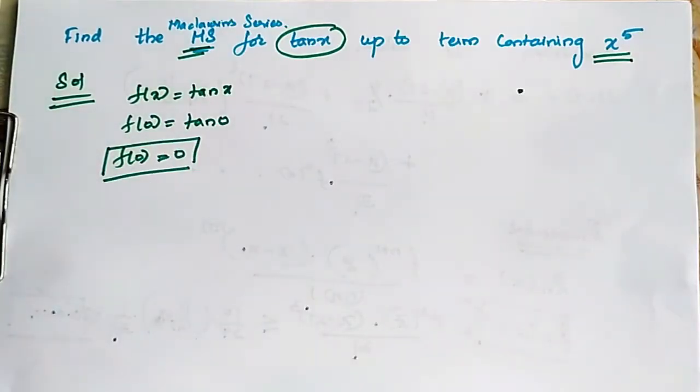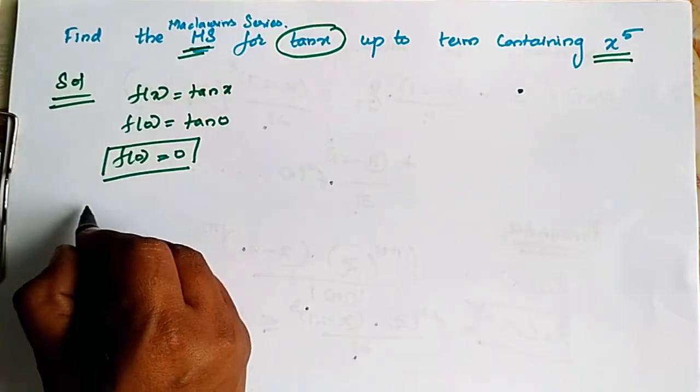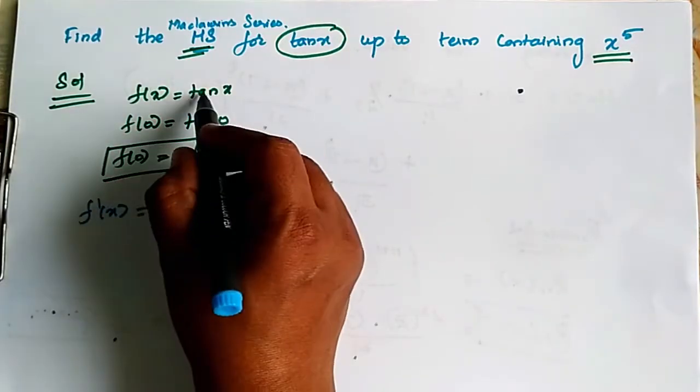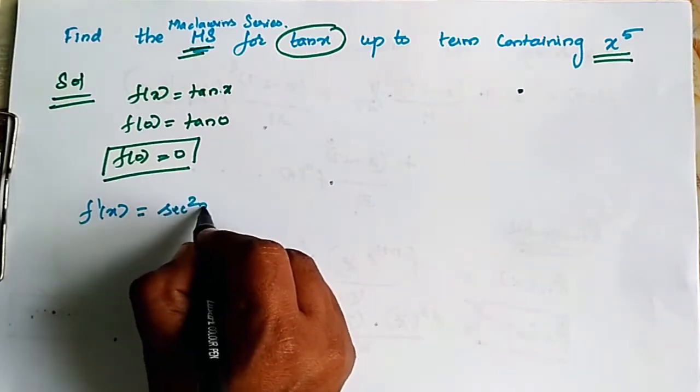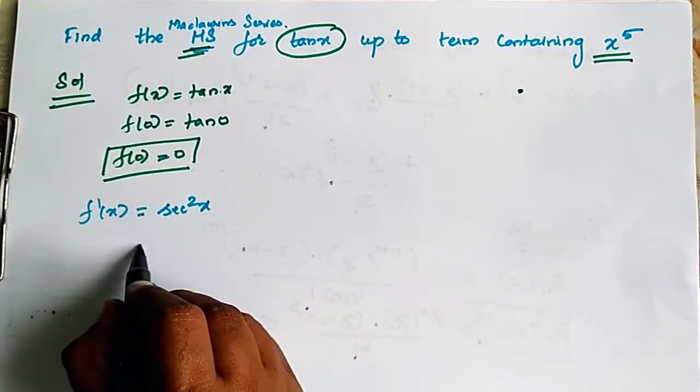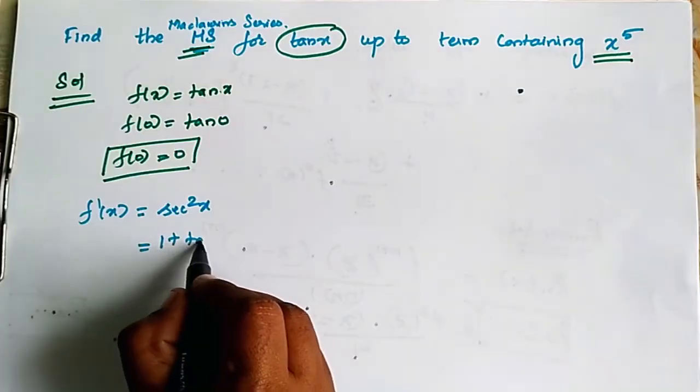Next, f dash of x. f dash of x is equal to differentiation of tan x is secant square x. So secant square x is 1 plus tan square x.